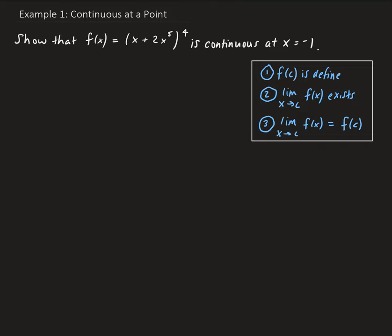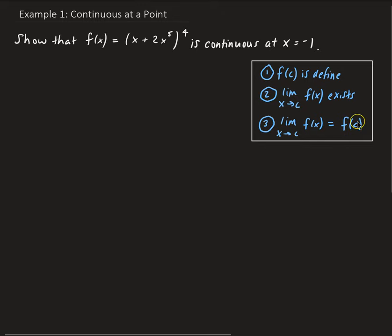In this example, we want to show that the function we have here — which is x plus 2x to the fifth power, all raised to the fourth power — is continuous at negative 1. Remember, to show a function is continuous at a point, we need to make sure the function evaluated at that point is defined, the limit of f as x approaches that point exists, and that the limit equals the function value at that point.